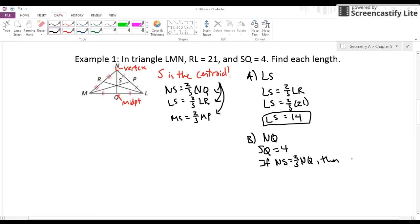then SQ should be one-third of NQ, because two-thirds plus one-third equals one. That's just using some logic. So then if I know SQ is 4, I can solve for NQ by multiplying both sides by 3, and NQ should equal 12 units.